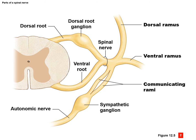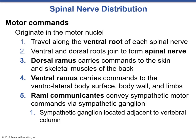The communicating rami branch off into the sympathetic ganglion and autonomic nerves, primarily dealing with autonomic nervous system functions related to visceral organs — digestive organs and glands. A motor command originates in a motor nucleus in the ventral portion of the spinal cord and will travel along the ventral root of each spinal nerve. From there, the ventral and dorsal roots join to form the spinal nerve, then branch to the dorsal ramus if going to the back, the ventral ramus if going to the body surface, walls, or limbs, or to the rami communicantes to convey sympathetic motor commands via sympathetic ganglions — for example, to activate the digestive system.